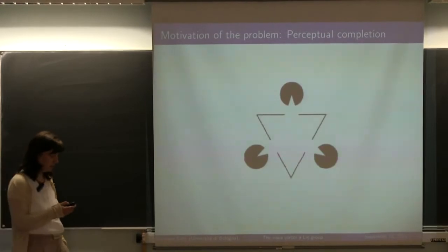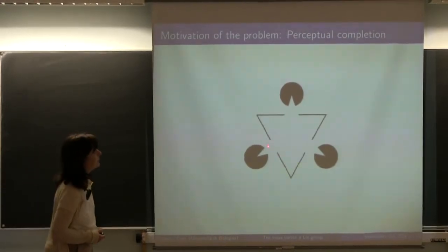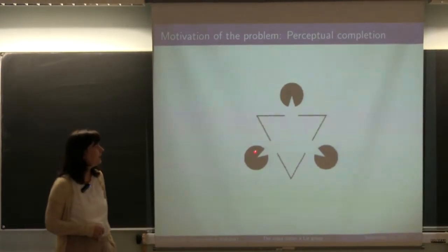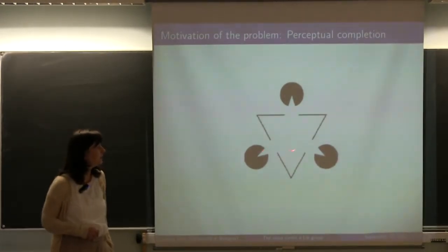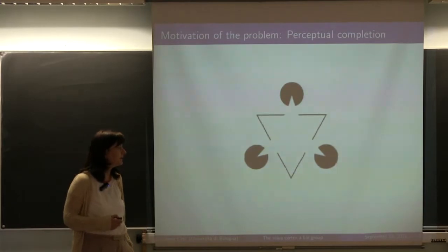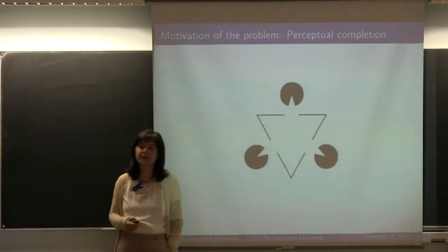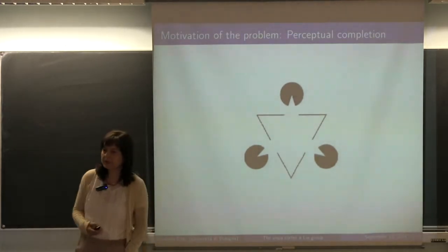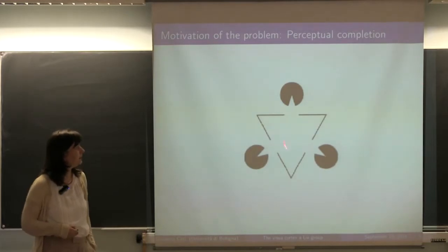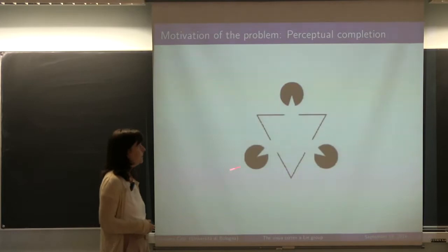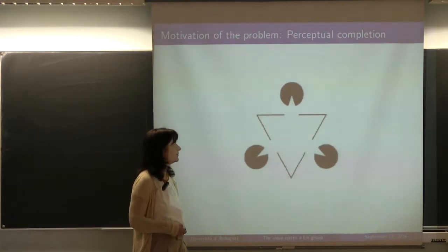He has already shown this famous Kanizsa triangle, and in this Kanizsa triangle we have at least two perceptual problems. One is the completion of the boundaries, since here there are no boundaries in the image, but our visual system is able to detect these subjective boundaries.